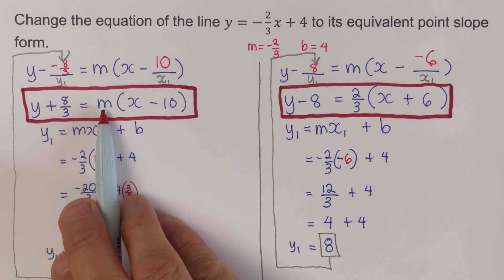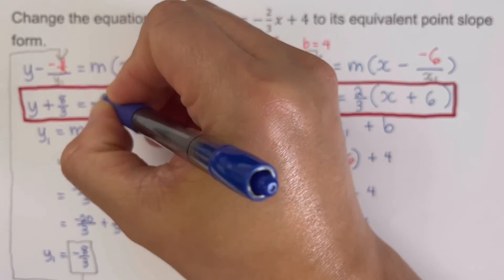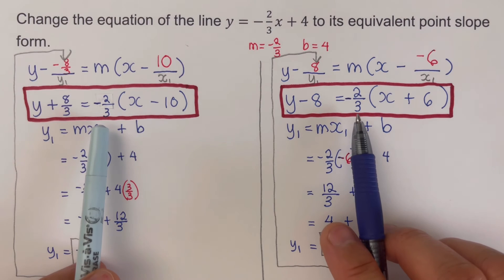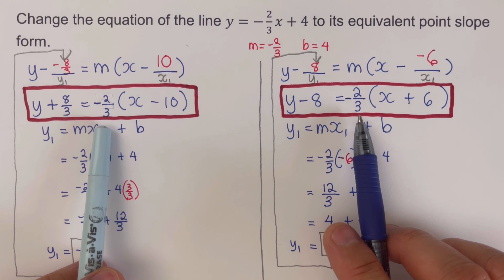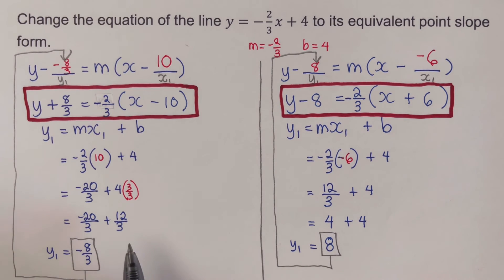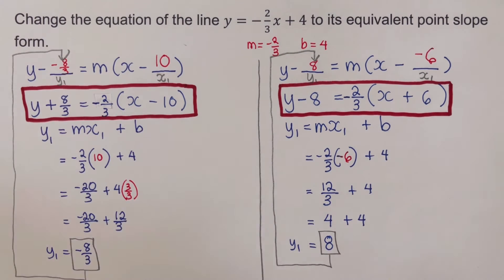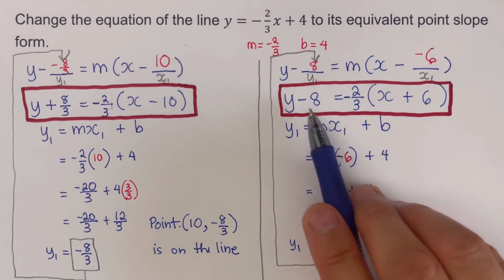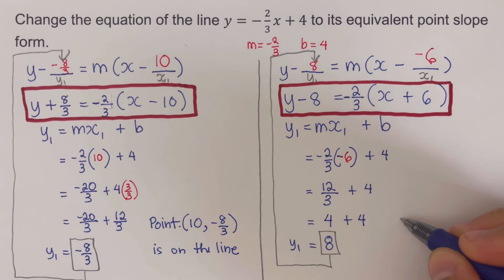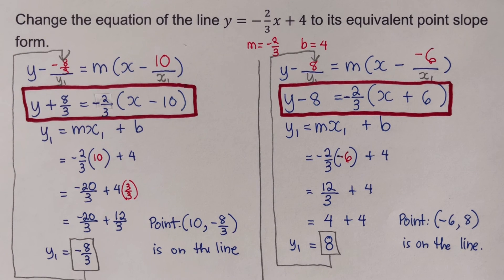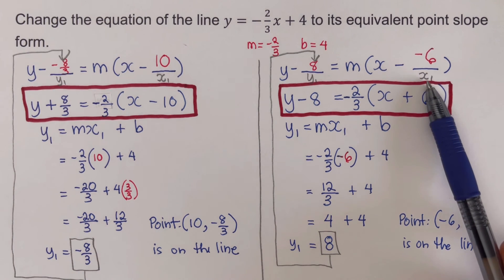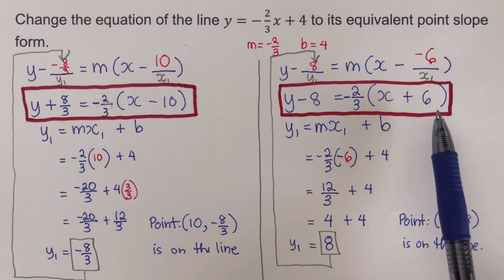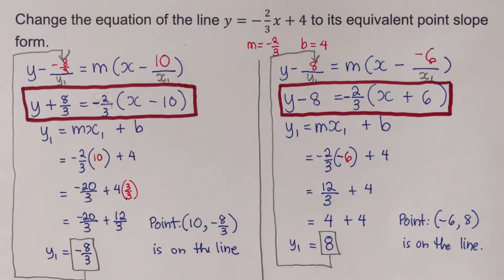The m here can be changed to negative 2 over 3. These two equations are equivalent and both in point-slope form. The first tells us that the point (10, negative 8 over 3) is on the line, and the second tells us that the point (negative 6, 8) is also on the line. There are an infinite number of equivalent point-slope forms — just pick any value for x sub 1 and solve for y sub 1.